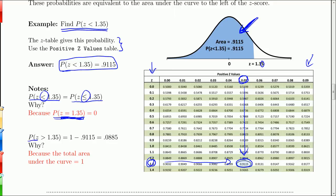The probability that z is bigger than 1.35 — that area to the right — is 1 minus 0.9115. The answer is 0.0885. The reason is that the total area is 1. So if the table gives you area to the left, and you want area to the right, you find the area in the table and subtract it from 1.